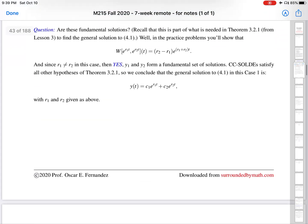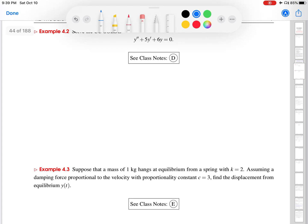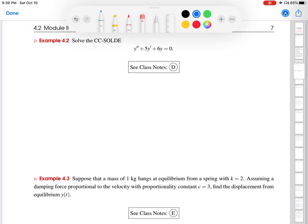So let's go back to the example that we are asked to work on. Because this is the CC-SOLDE, we know that a equals 1—that's the coefficient of y double prime—this is b, the coefficient of y prime, and this is c, the coefficient of y.